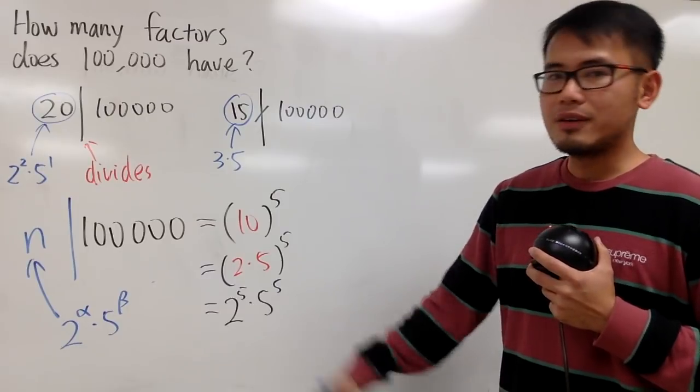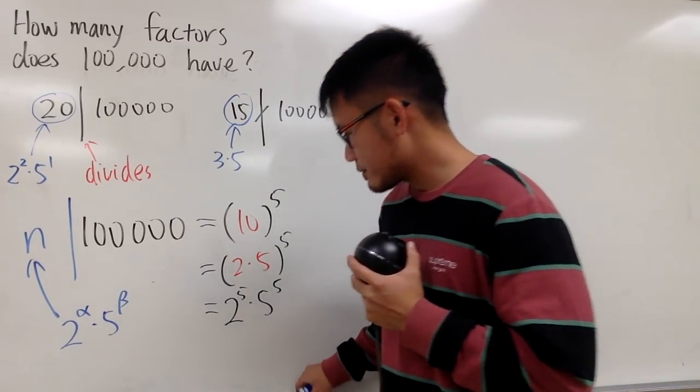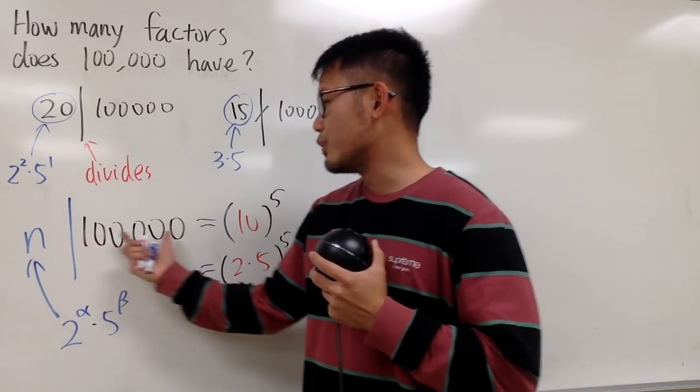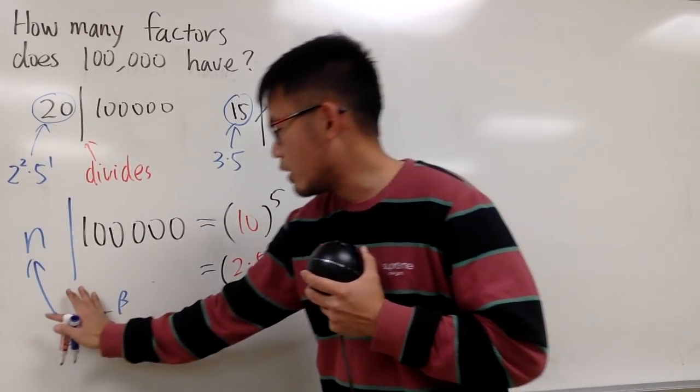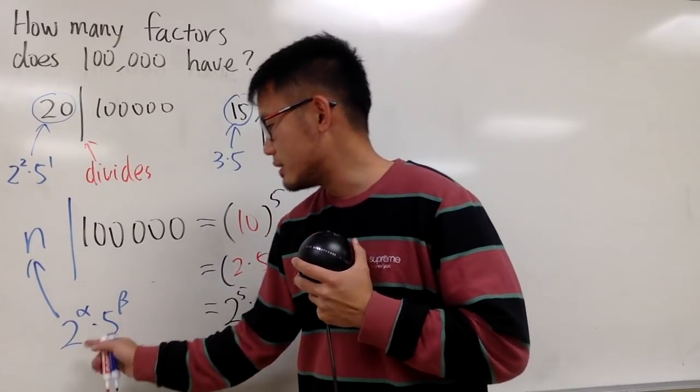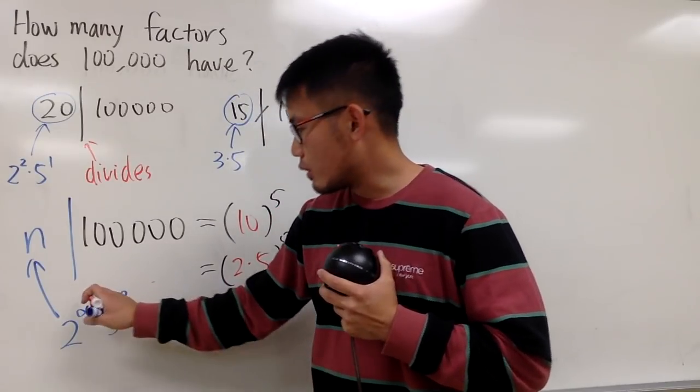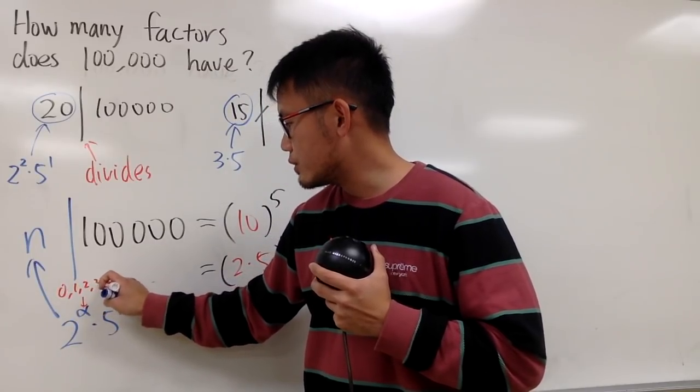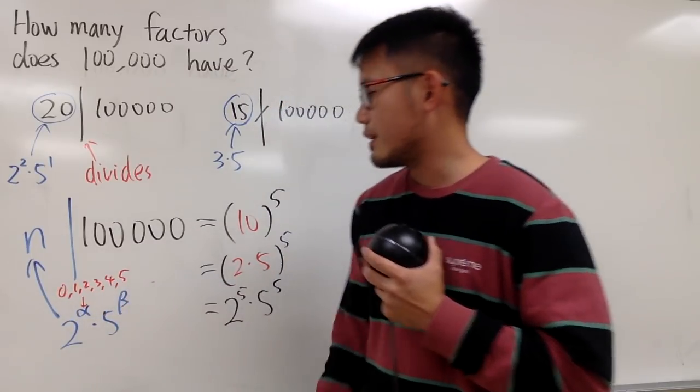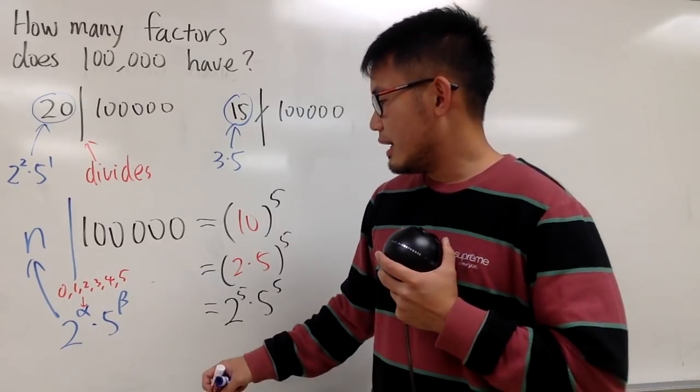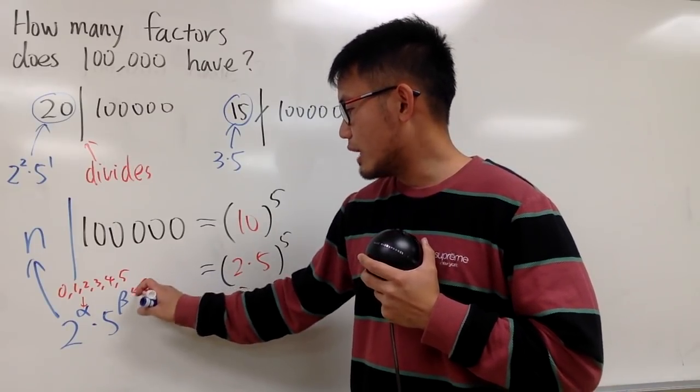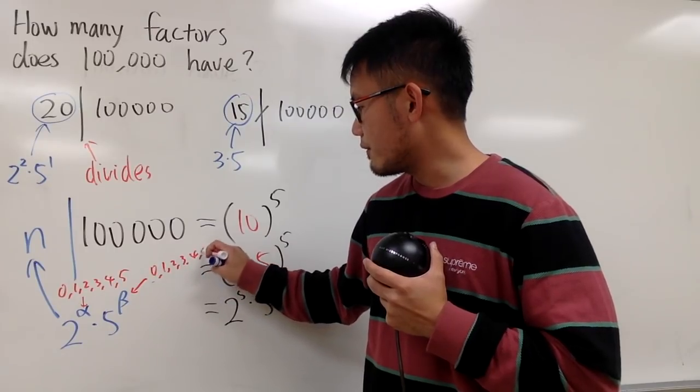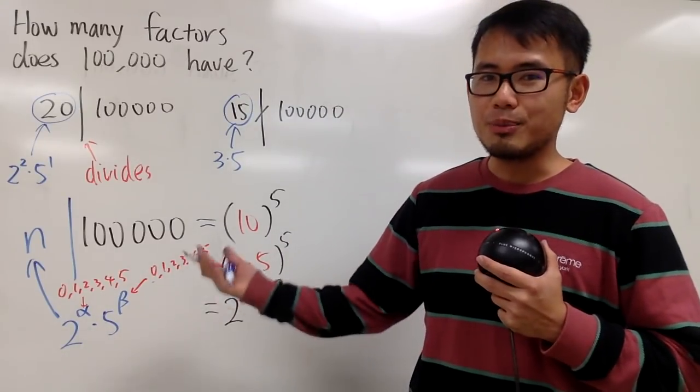And what are the alpha values? Well, imagine if I just have 5. 5 does go into 100,000, right? Well, that means I don't want to see the 2. And that means alpha can be 0. So right here, in fact, alpha can be 0, 1, 2, 3, 4, 5. And likewise, I can also have the beta to be 0, 1, 2, 3, 4, 5. And as long as you pair this up carefully,